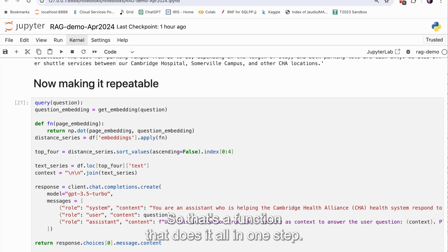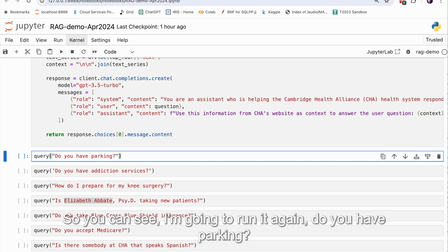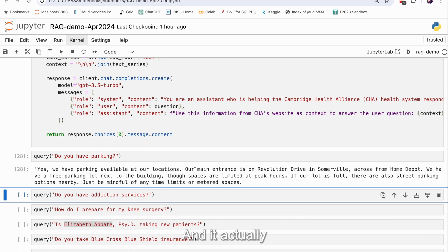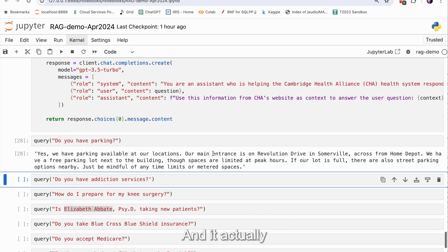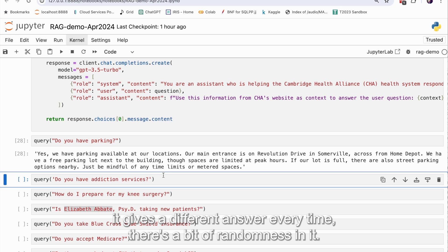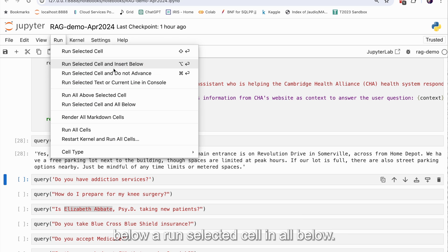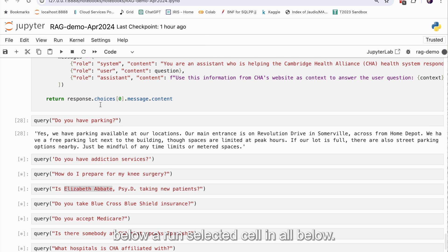So that's a function that does it all in one step. So you can see, I'm going to run it again and do you have parking? And it actually, just like these OpenAI models or any of these LLMs, it gives a different answer every time. There's a bit of randomness in it, but another good answer. And then I'm just going to run everything below. Run selected cell and all below.